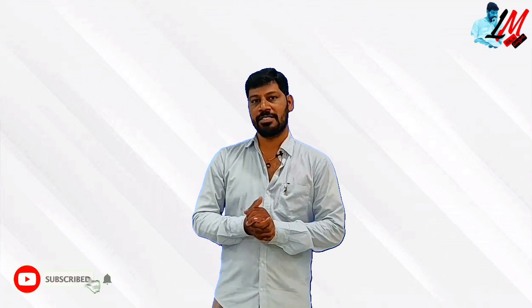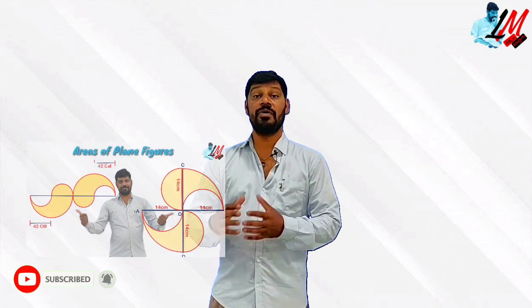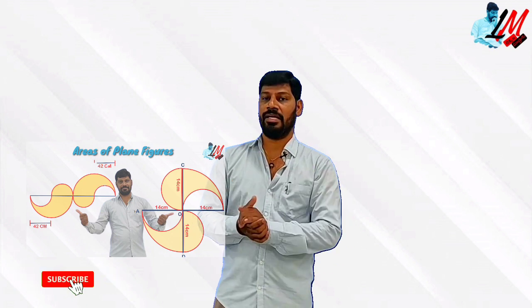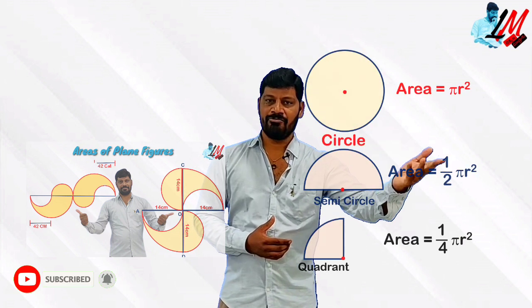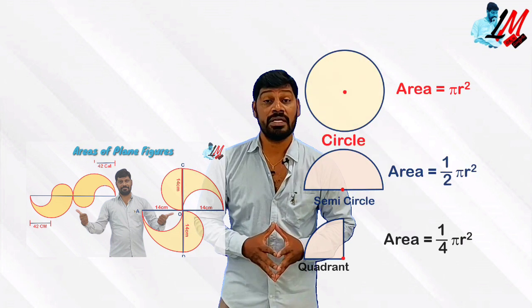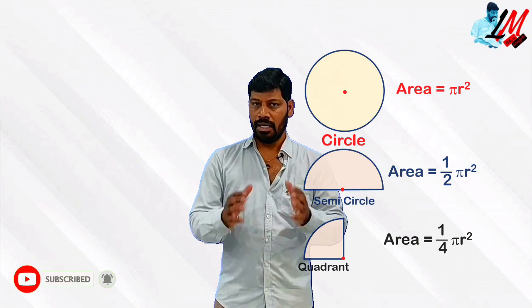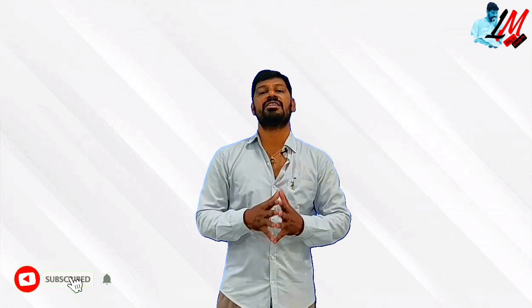Hello everyone, this is your Lakala Master Haragopal. In the previous video we discussed the most beautiful problem from 8th class areas of plane figures, based on the simple formulas pi r square, half pi r square, and one-fourth pi r square — which are the areas of a circle, semicircle, and quadrant. In this video I am going to introduce another two problems based on the same formulas, but not from the textbook. They are really pretty, simple, and beautiful problems which you need to know before attempting the entire chapter on areas of plane figures.